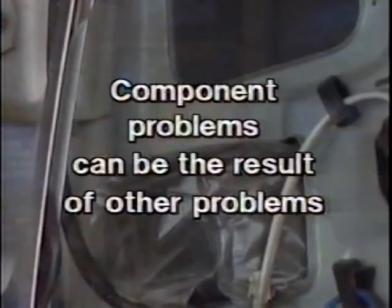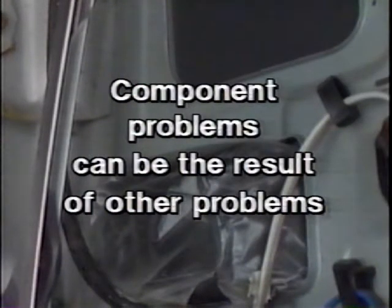Some window system problems are caused by improper parts usage — for example, the wrong type of rivet used on the sash channel often makes a clicking noise in operation. Component problems like disengagement of the glass guides can be the result of other system problems. So before replacing a guide or other component, it's wise to check the entire system for possible problem conditions.